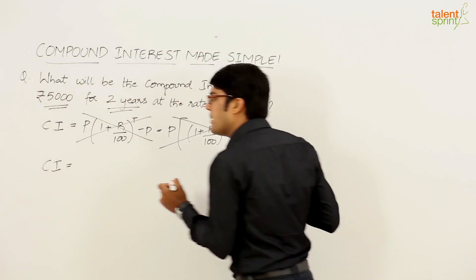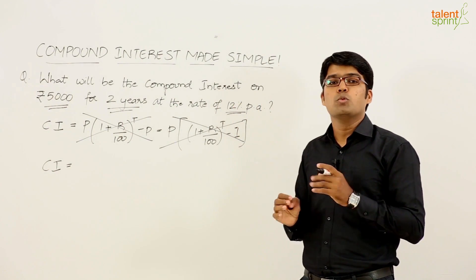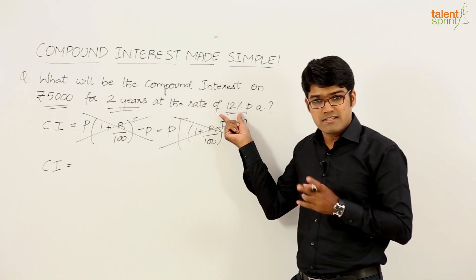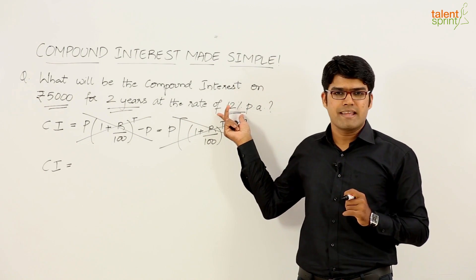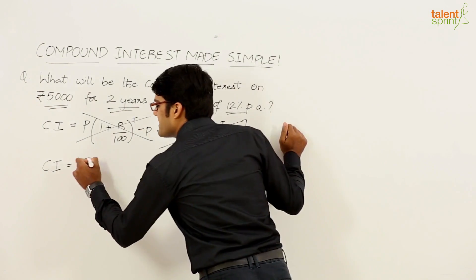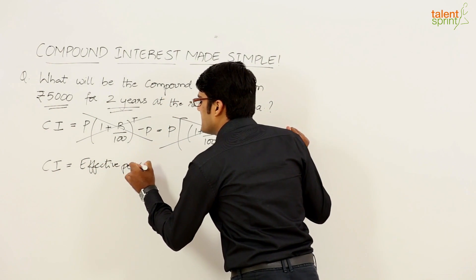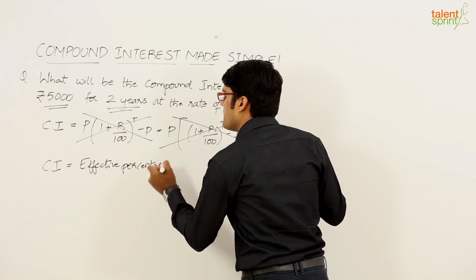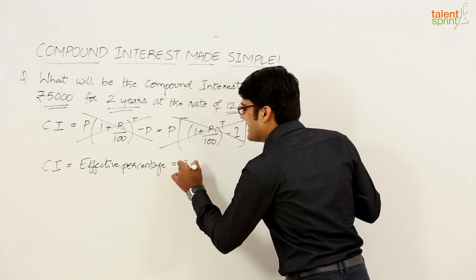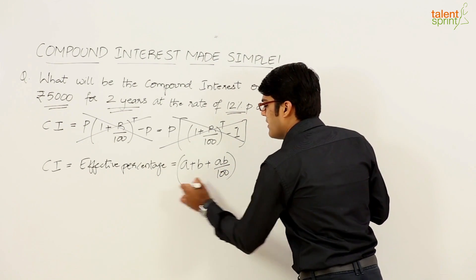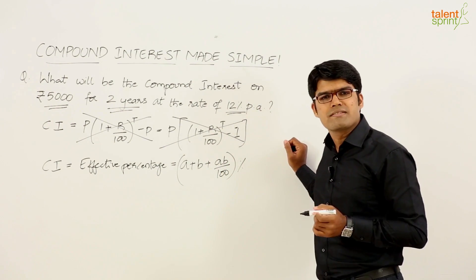Now the concept here is as follows. See, compound interest is nothing but the effective of the two percentages. What are the two percentages here? The rate of interest in the first year and the rate of interest in the second year. Compound interest can be taken as effective percentage and how do we get effective percentage? Like we have discussed in one of our earlier videos, effective percentage can be taken as A plus B plus AB by 100 percent, where A and B are the two percentages.